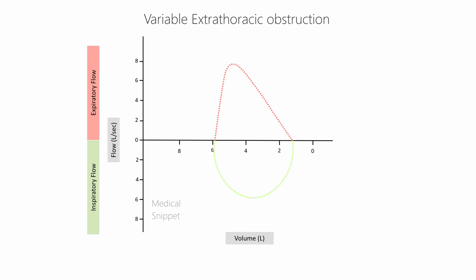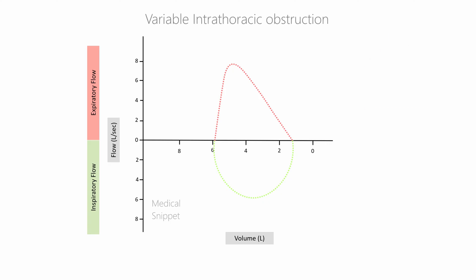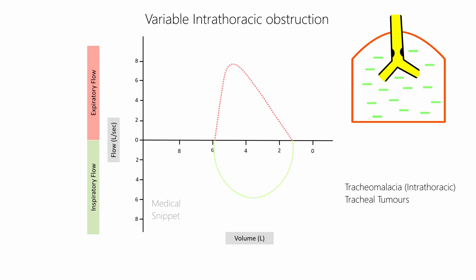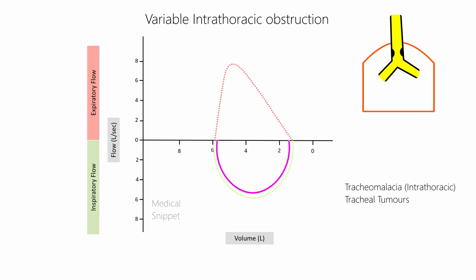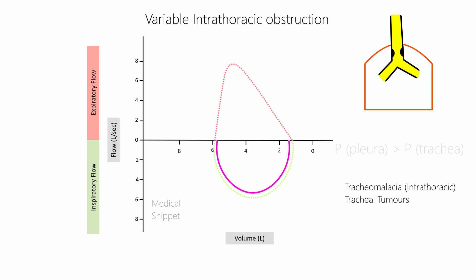For variable intra-thoracic obstruction — such as tracheomalacia of the intra-thoracic trachea and tracheal tumors — during inspiration, the extra-luminal pleural pressure is negative relative to intraluminal pressure, so there is no flow obstruction and the inspiratory curve is normal. During expiration, the pleural pressure is positive and exceeds intraluminal pressure, causing tracheal narrowing and reduction in expiratory flow rates.